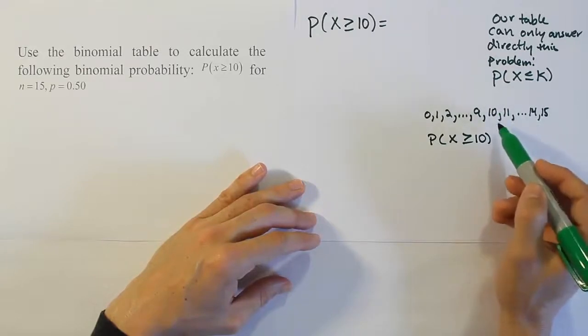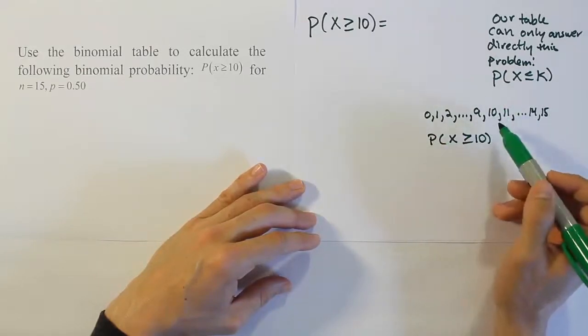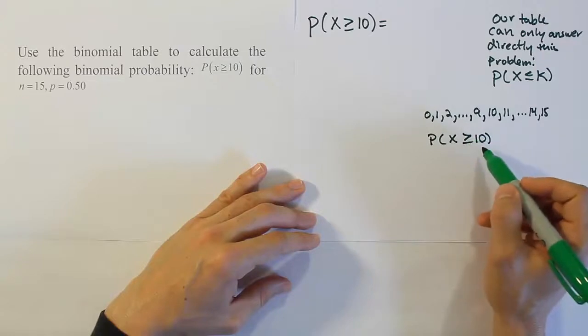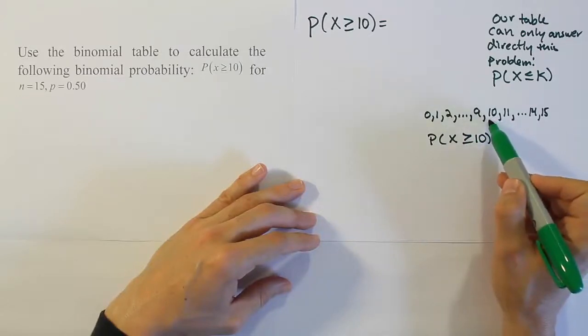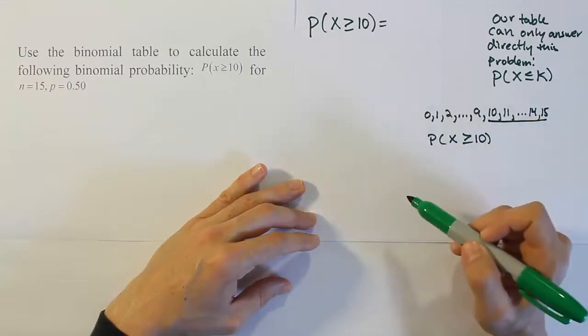So if I looked up 10, I would get from 10 to 0, but that's not what I want. I want greater than or equal to 10. I want to include 10 in my answer and I want to go from here to here. That's what I want.